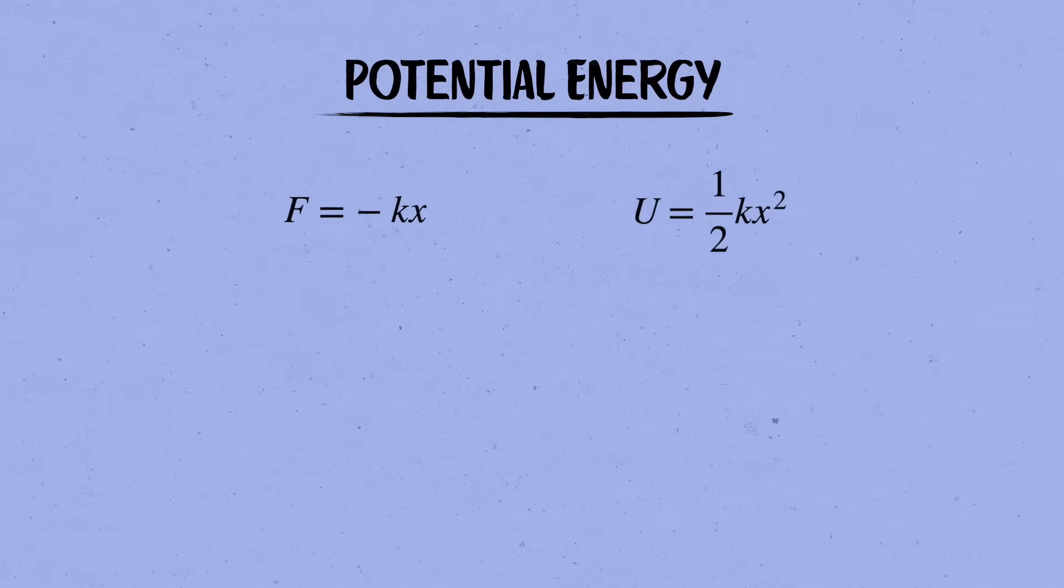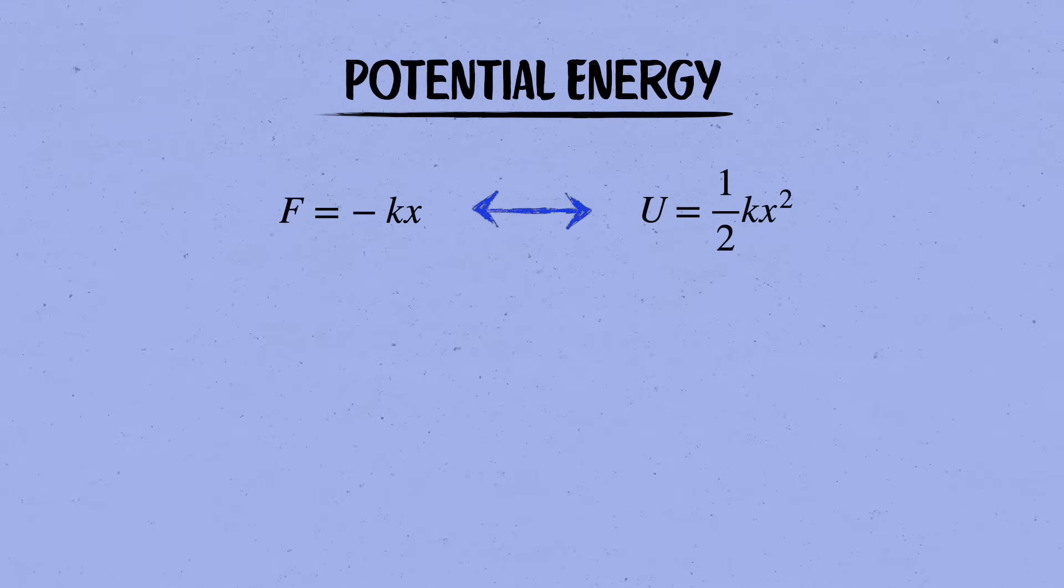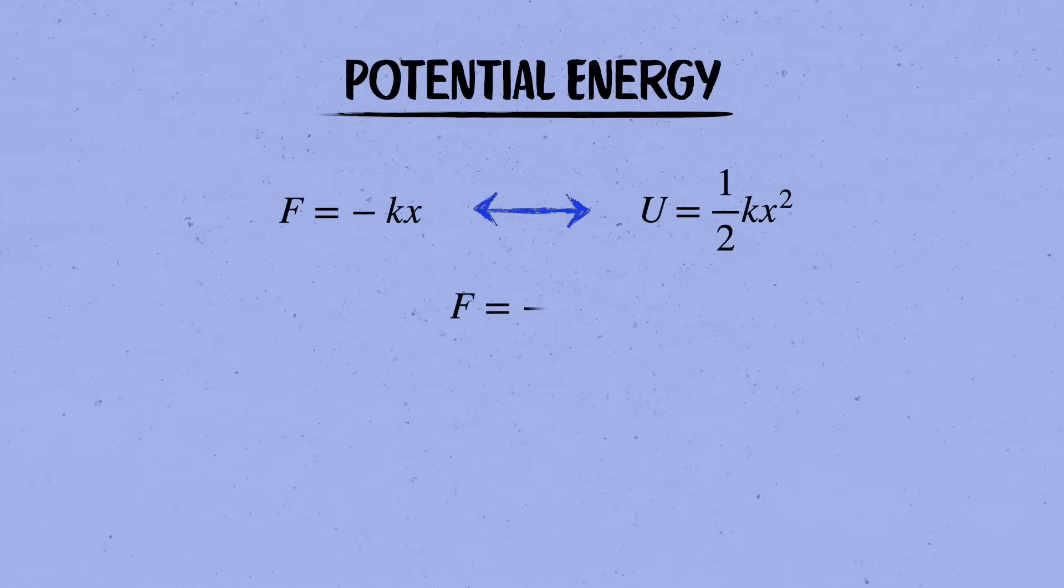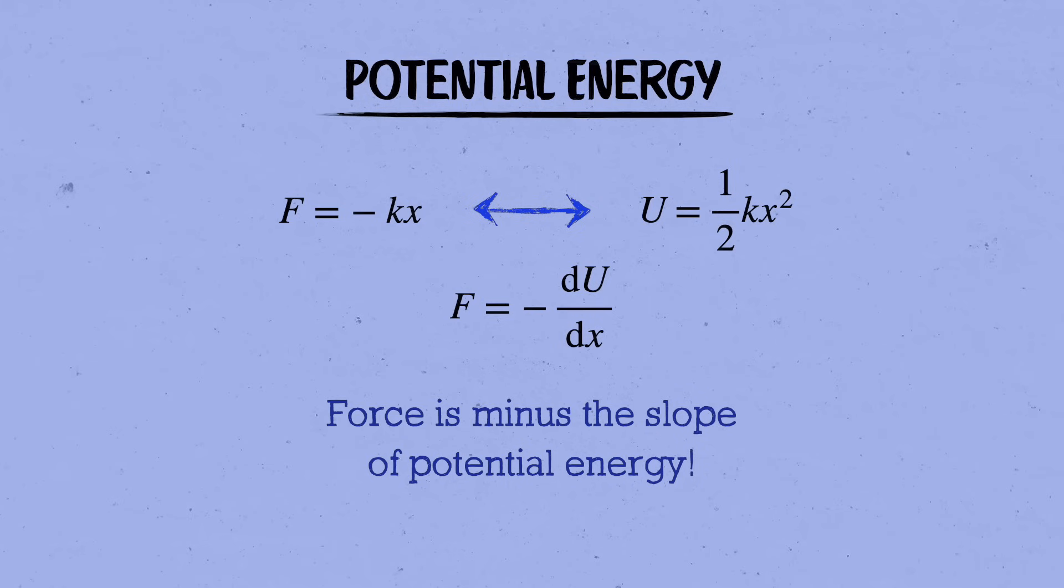Notice that the force f equals minus kx is related to the potential energy u equals one half kx squared by f equals minus du by dx. In other words, the force is equal to minus the slope of the potential energy curve, and that's the general relationship between force and potential energy. Notice that it means that in equilibrium, where the force is equal to zero, the slope of the potential must vanish.